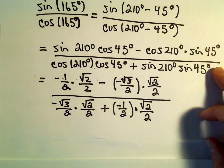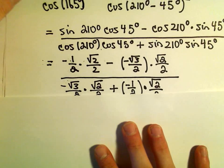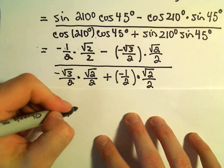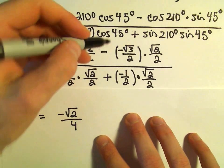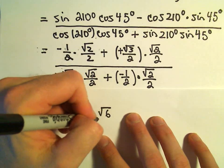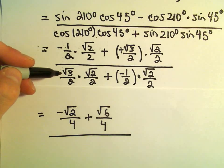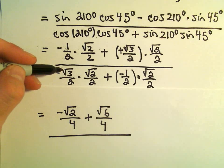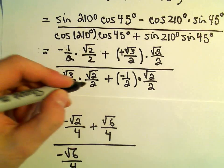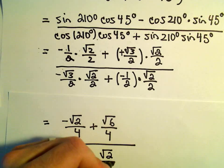Just got to simplify down this nice little fraction. In the numerator, we'd have negative square root of 2 over 4. The negative times negative will make a positive. The square root of 3 times the square root of 2 will be square root of 6, over 4. In the denominator, it looks like we'll have negative root 3 times root 2, which is negative square root of 6 over 4. Then we'll get a negative square root of 2 over 4.